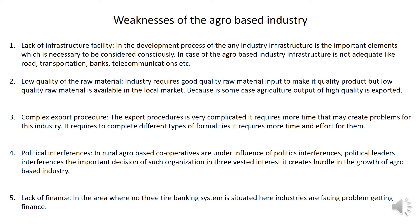The next weakness is political interference. In rural areas, agro-based cooperatives are under the influence of political interference and political leaders. This interference in important decisions serves vested interests and creates hurdles in the growth of agro-based industries. Another weakness is lack of finance — in areas where no three-tier banking system exists, industries face problems obtaining finance.